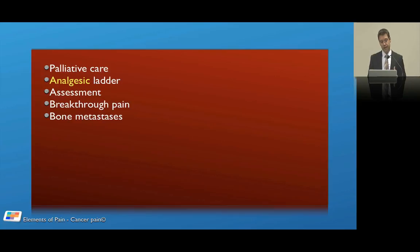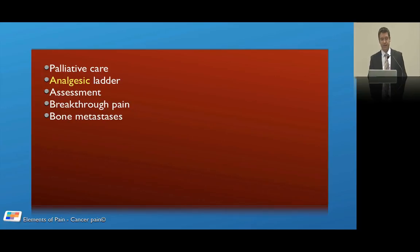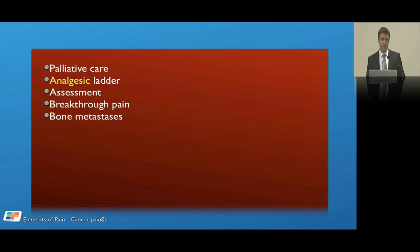The big things that need to be understood are a definition of palliative care, the analgesic ladder and how best to use what we've got at our disposal, and the assessment of cancer pain. We need to know how to assess chronic pain but there might be some differences in assessing cancer pain. Then we'll look at breakthrough pain and bone metastases — the two big subjects in cancer pain — because they happen so often and are so important. That's the way we're going to structure the talk.